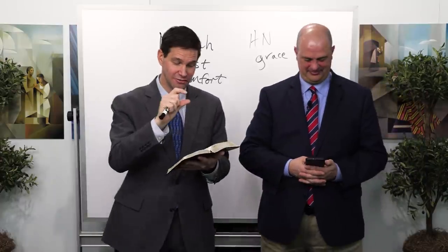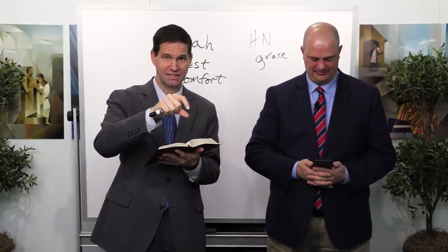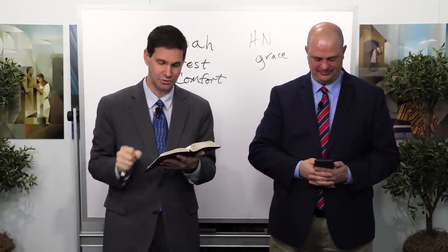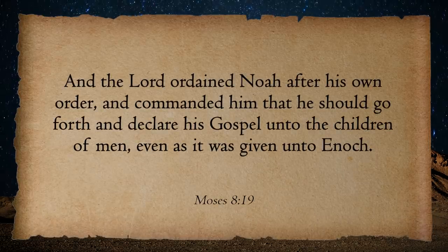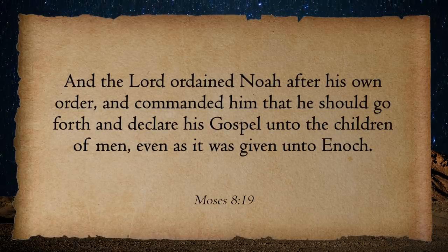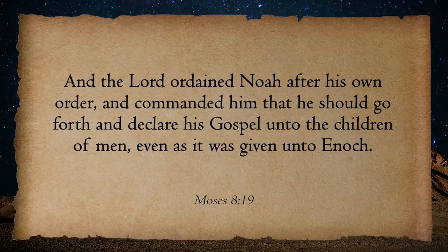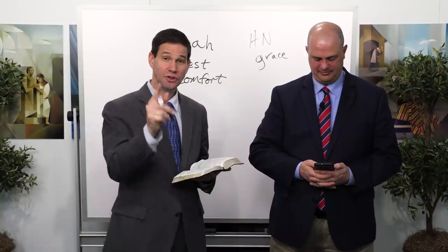The problem is in verse 18. Let's look at the solution — verse 19: 'And the Lord ordained Noah after his own order and commanded him that he should go forth and declare his gospel unto the children of man, even as it was given unto Enoch.' God did not say, 'Oh Noah, this is hard, this is making you kind of unpopular, this is putting your life in danger — tell you what, we're going to let you have a break here.'